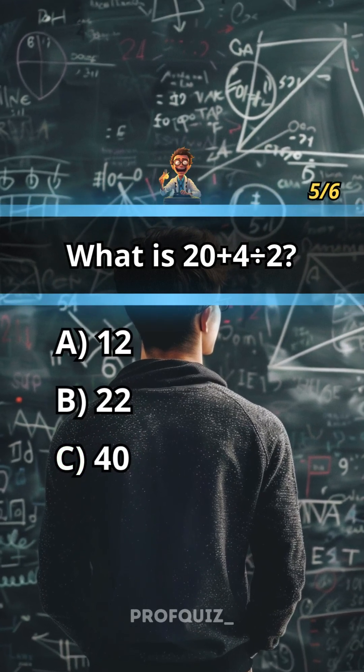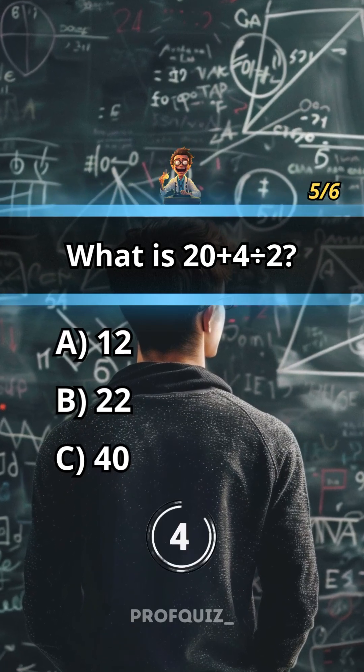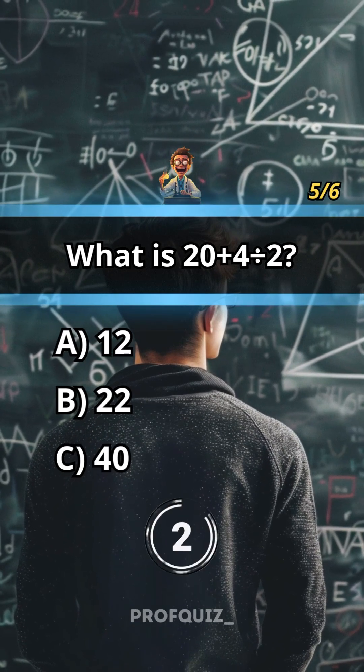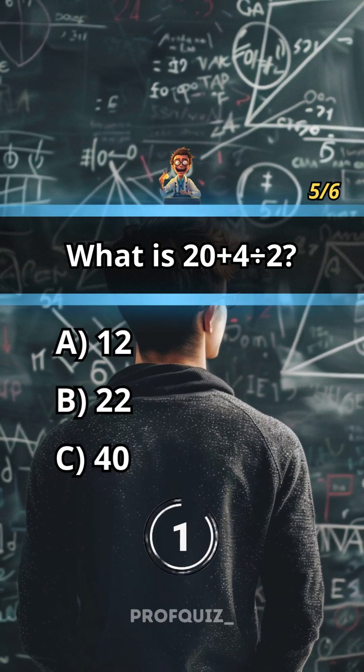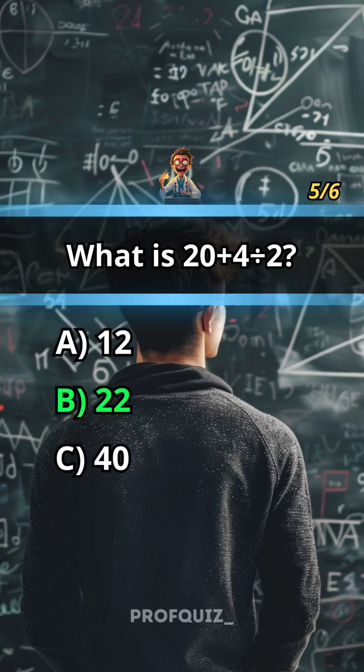What is 20 plus 4 divided by 2? Like this quiz if you enjoyed it. Answer: B, 22.